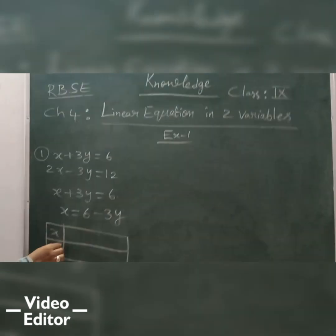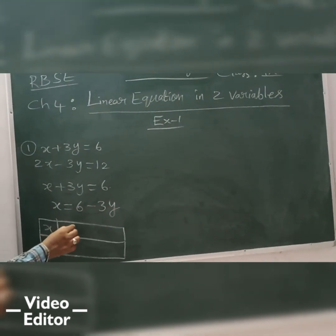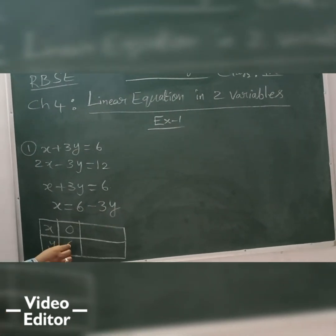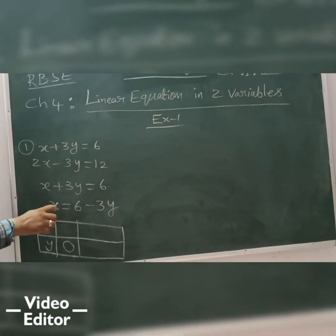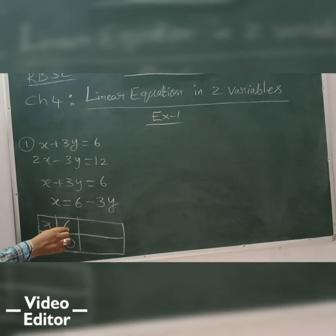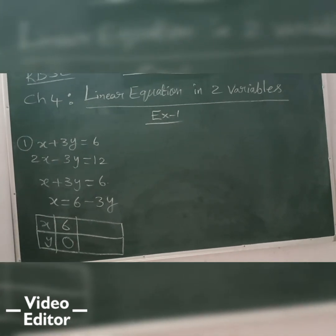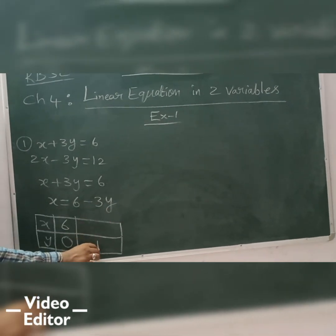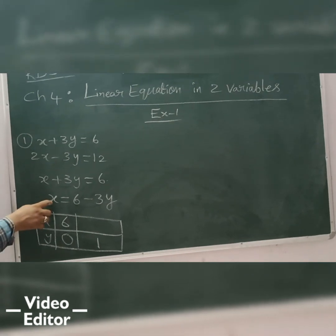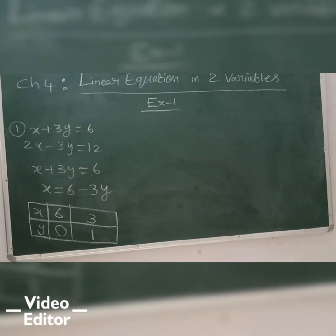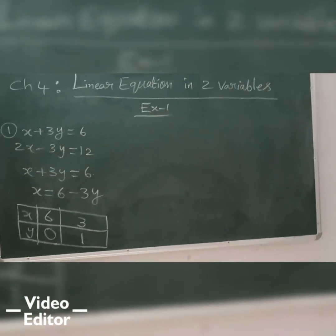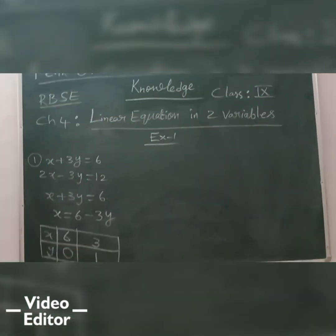So, now, I can write x is equal to 6 minus 3y. x and y. So, I will take y as 0. What should be my x? It is going to be 6. And then, if I take y as 1, what is going to be my x? 6 minus 3 is nothing but 3. So, now, two points will be here.